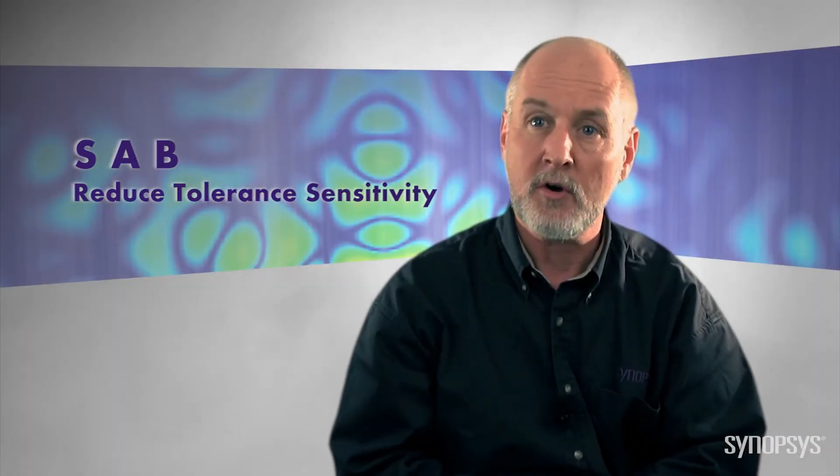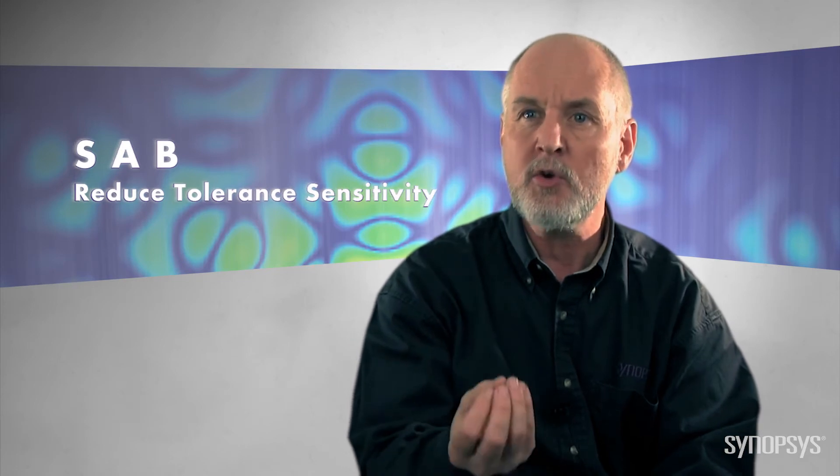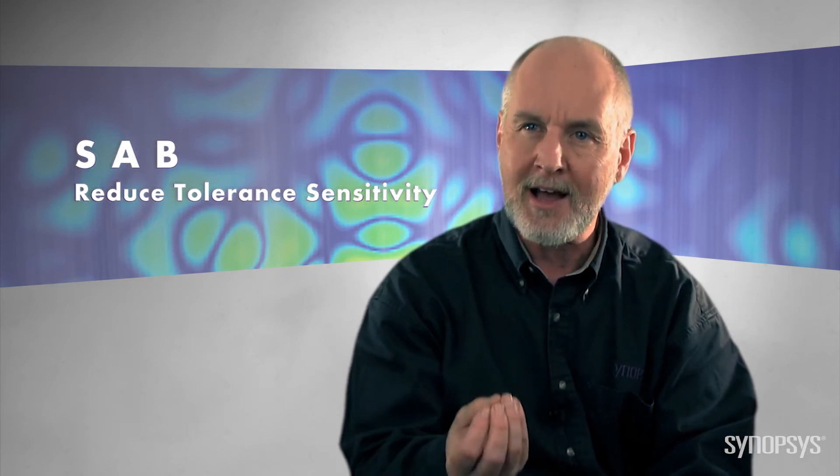On top of that, we have a very unique capability called SAB, and this is essentially a new error function component which allows you to directly optimize on the as-built RMS wavefront performance for your lens, including tolerances and compensators, as part of the optimization process.